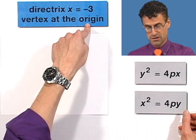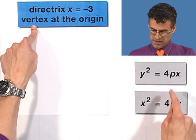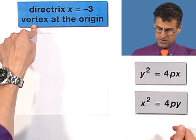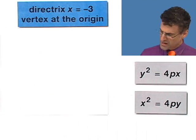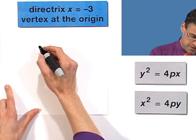We can write it as y squared equals 4px, or x squared equals 4py, because we know that the parabola goes through the origin. And since the vertex is actually at the origin, these are the only possibilities. But let's just think about what this might look like. Let's try to sketch a little picture of this thing.